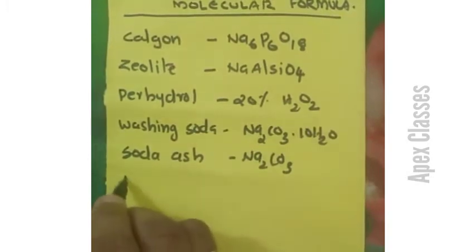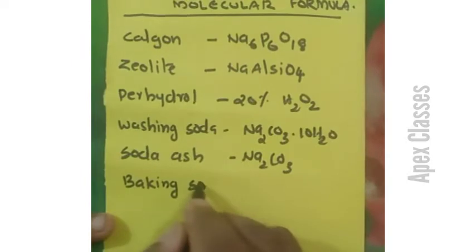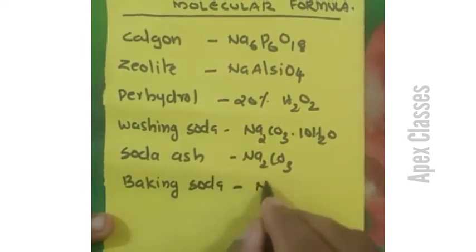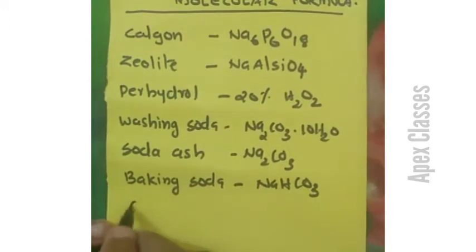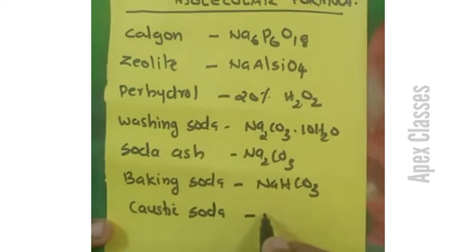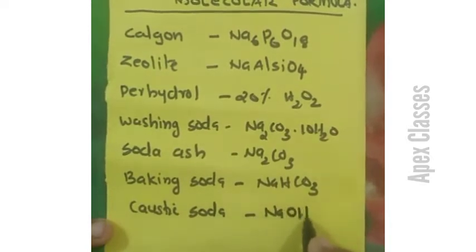Baking Soda is NaHCO3. Caustic Soda is NaOH.